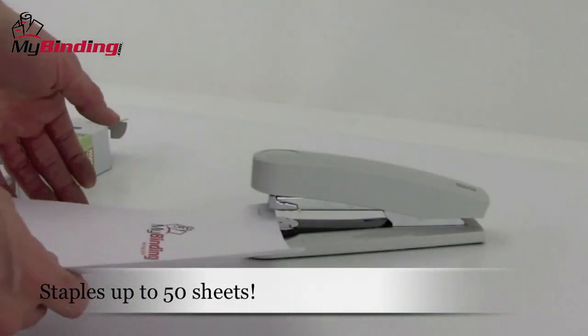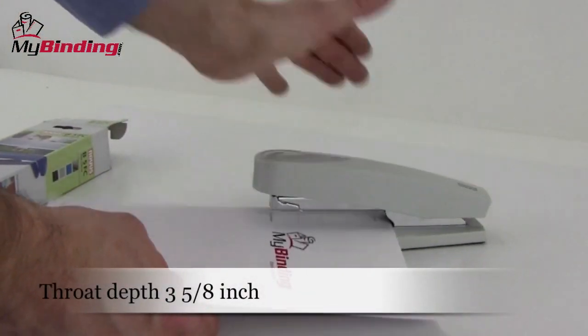And the B5 FC can punch up to 50 sheets at a time. It has a throat depth of 3 5⁄8 inches for large margins.